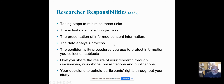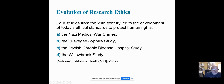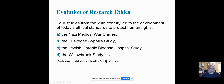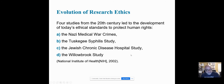Looking at the evolution of research ethics — there are four studies from the 20th century that led to the development of today's ethical standards to protect human rights. One of them was the Nazi medical war crimes. The other was the Tuskegee syphilis study, the Jewish chronic disease hospital study, and the Willowbrook study. We'll go over each one of them so you can get a better idea.